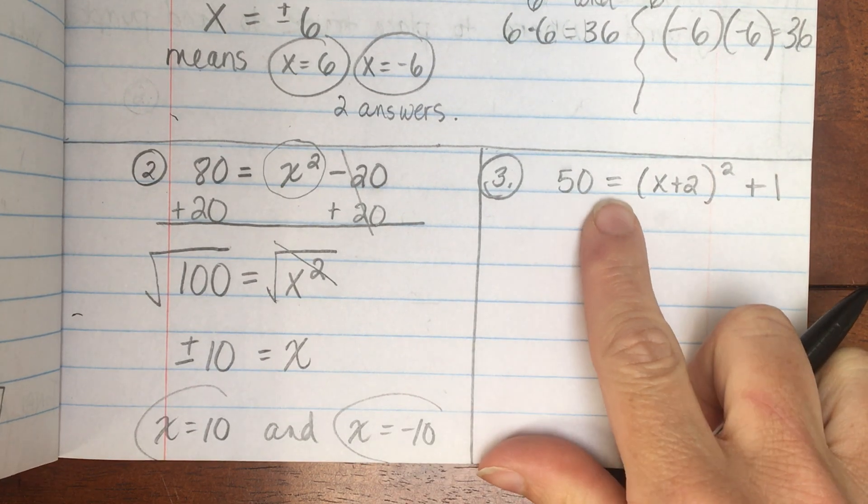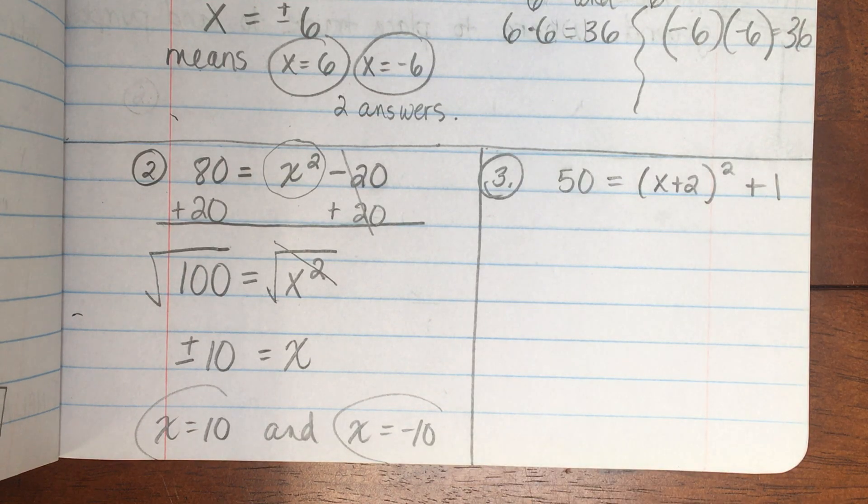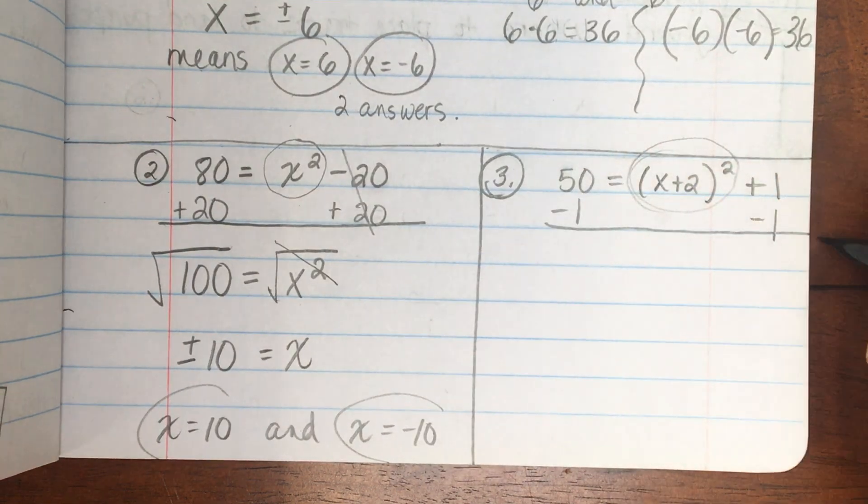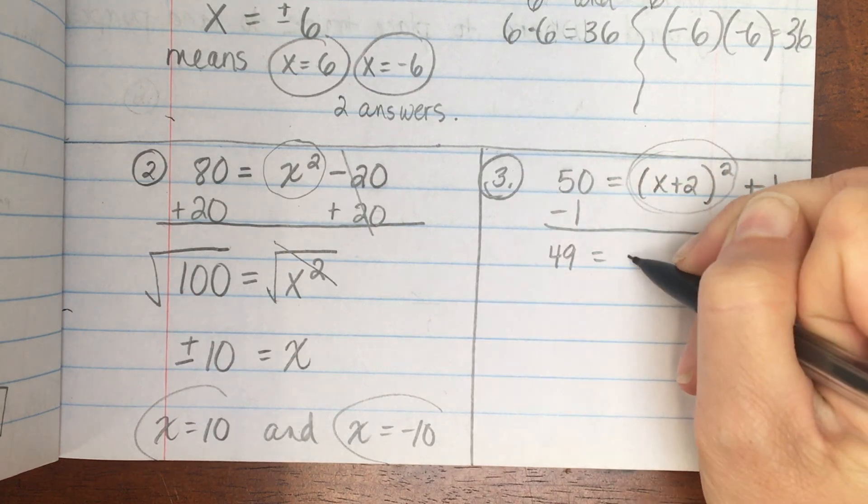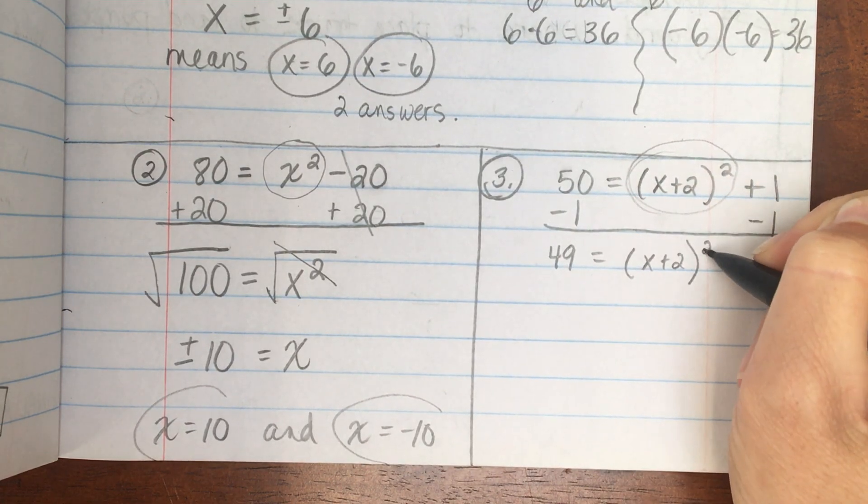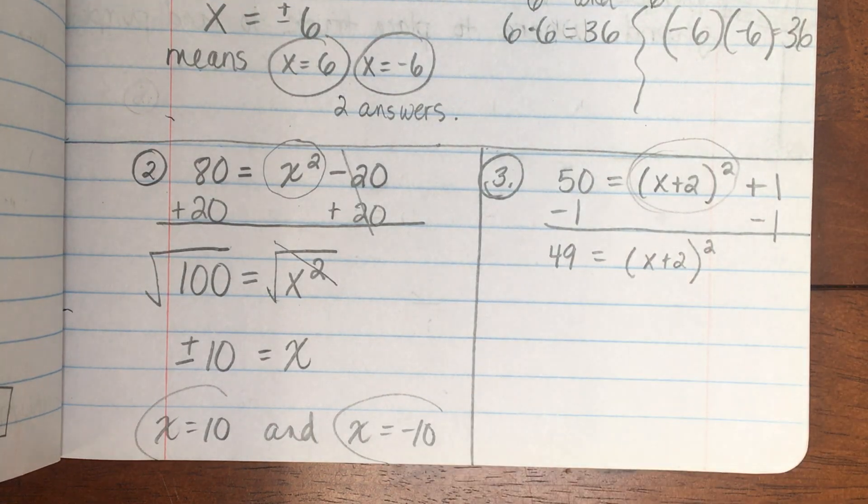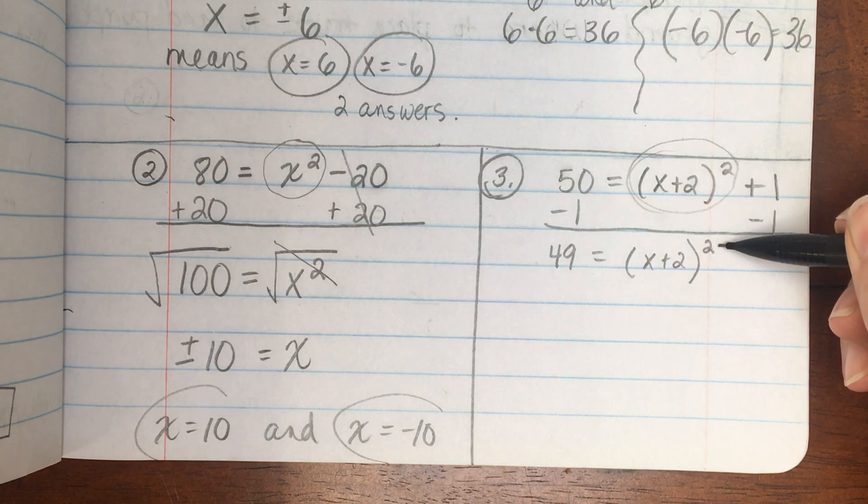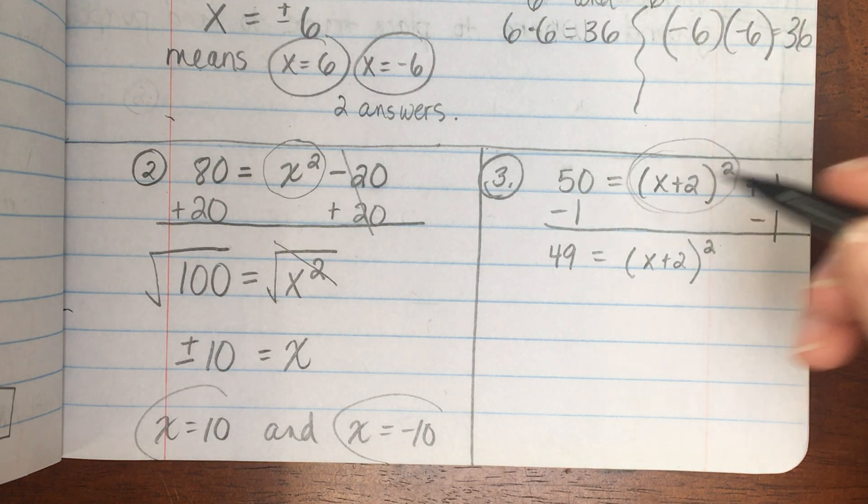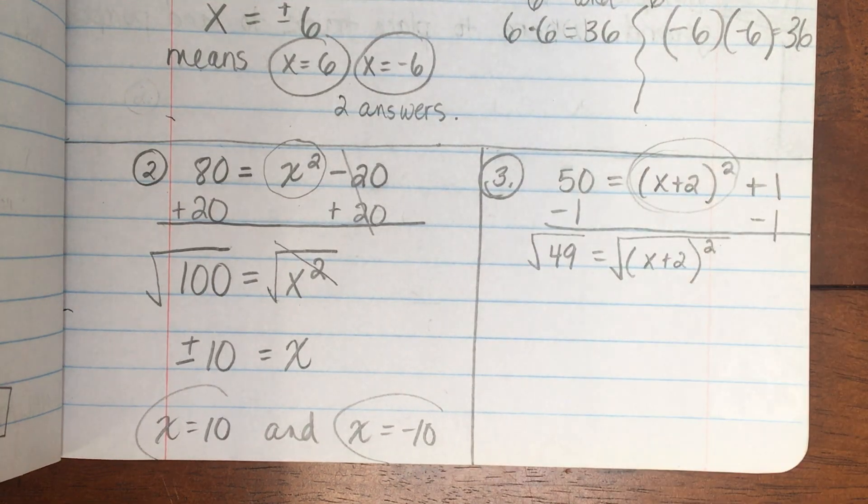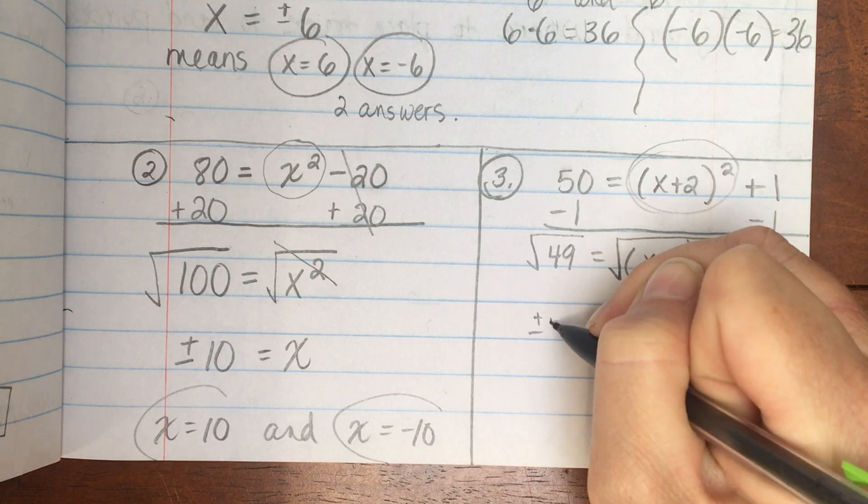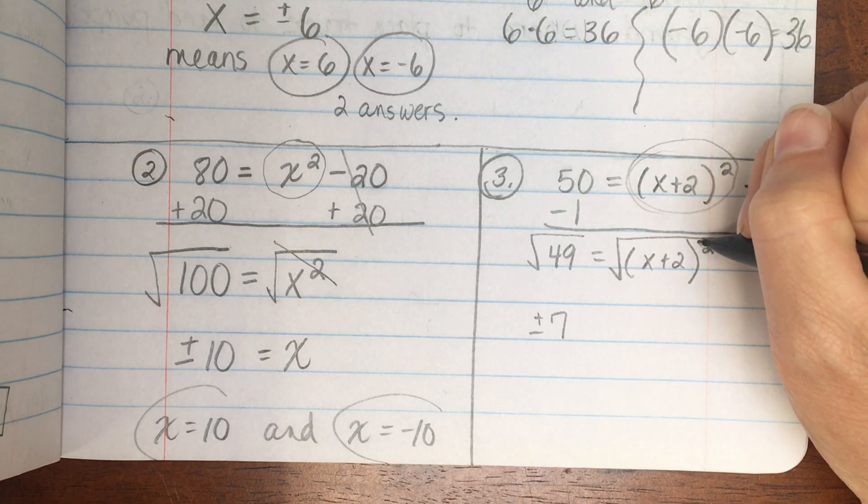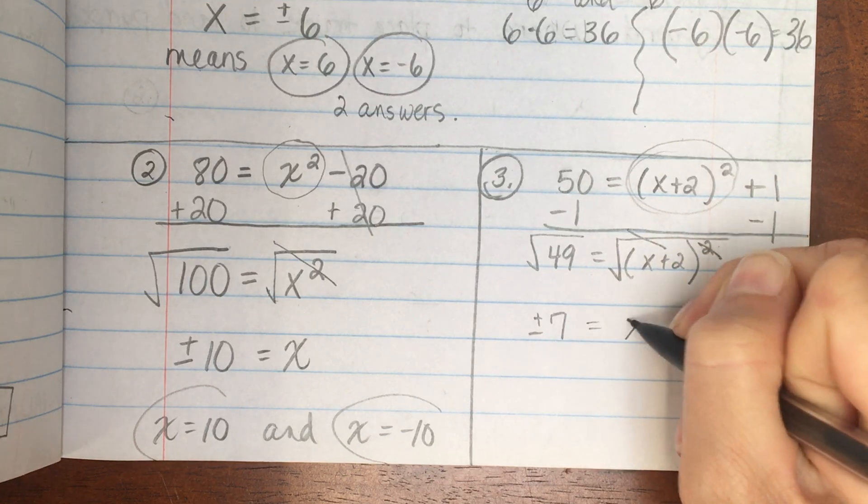Number three. 50 equals x plus 2 squared plus 1. My squared term is not isolated. I'm going to subtract 1 to both sides. And I get 49 equals the quantity x plus 2 squared. As I'm working my way in to solve for x, I need to get to that x, but I have to get rid of the squared first. What's the opposite of squaring? Square root. So I'm going to keep everything balanced by square rooting both sides. The square root of 49 is plus or minus 7. The square root of anything squared is just itself. So this just cancels this out. So you're left with x plus 2.